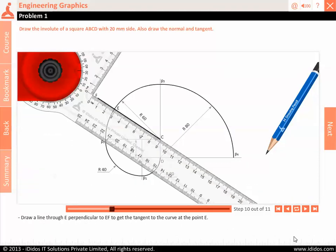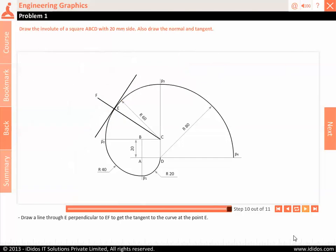Draw a line through E perpendicular to EF to get the tangent to the curve at the point E.